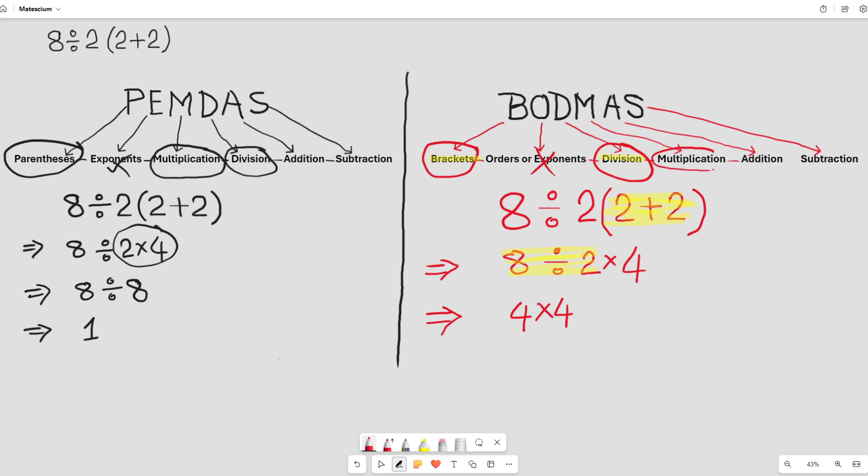Next step is multiplication. So, 4 times 4 is 16. 16 is the answer according to BODMAS acronyms.